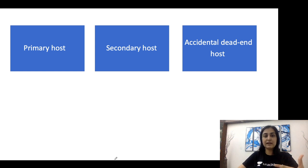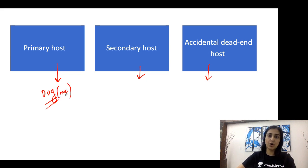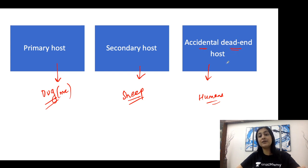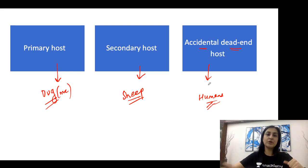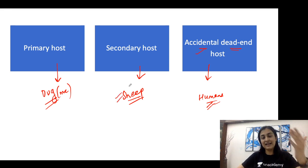Regarding the life cycle: the most common primary host is the dog, and the most common secondary host is the sheep. Humans are accidental hosts — neither primary nor secondary. Importantly, humans are dead-end hosts, meaning infection cannot spread from humans. The adult tapeworm lives in the dog, eggs are secreted in dog feces, and larvae develop in the secondary host.